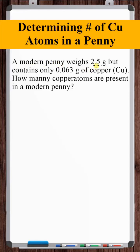A modern penny weighs 2.5 grams, but contains only 0.063 grams of copper. How many copper atoms are present in a modern penny?